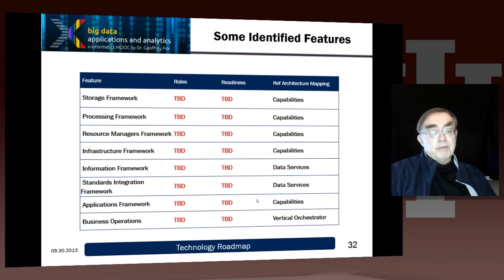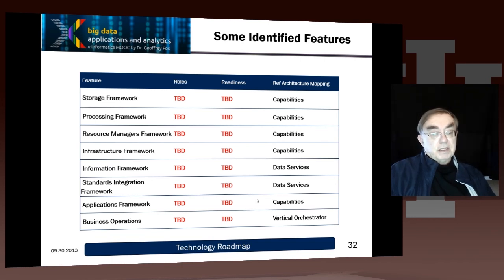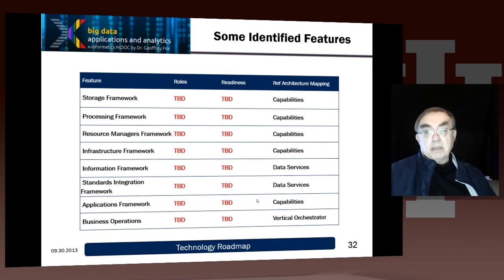So we have storage, processing, resource management, infrastructure, information itself, standards, applications, and business operations. These then map into the components of the reference architecture over here.